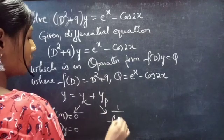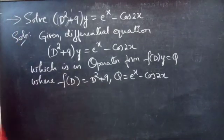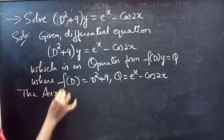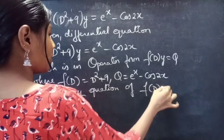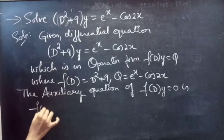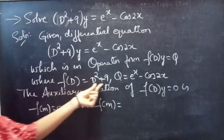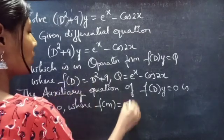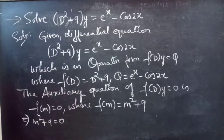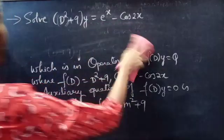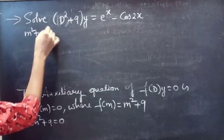We find yp using (1/f(D))·Q. To find yc, we use the auxiliary equation f(m) = 0, where f(D) = D² + 9. Replacing the differential operator D by m, we get f(m) = m² + 9. So the auxiliary equation becomes m² + 9 = 0. We can find the roots in two ways.